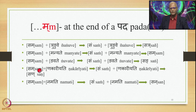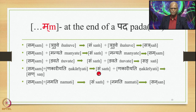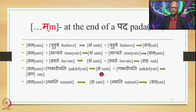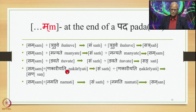Sam plus Nakariyati: Ma is substituted by Anuswara by 8.3.23, giving Sam Nakariyati. Then 8.4.59 substitutes this Anuswara by the nasal Parasavarana, giving Sam-nasal-Na-Nakariyati as output.